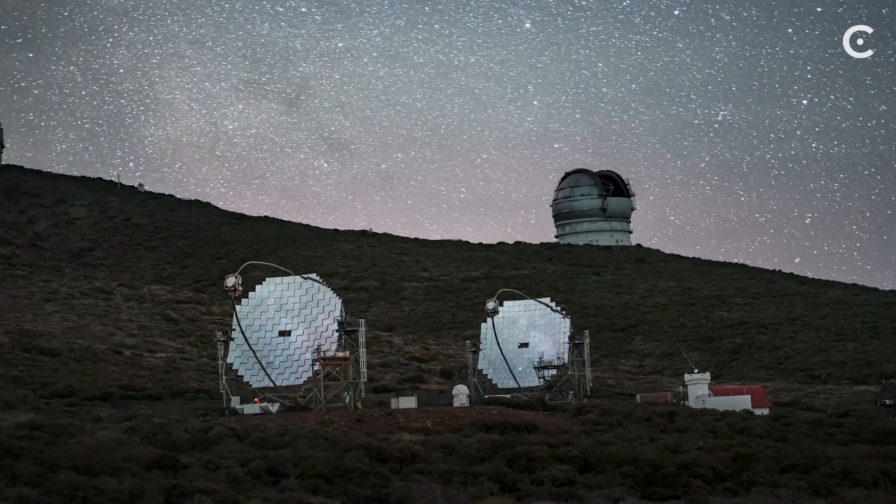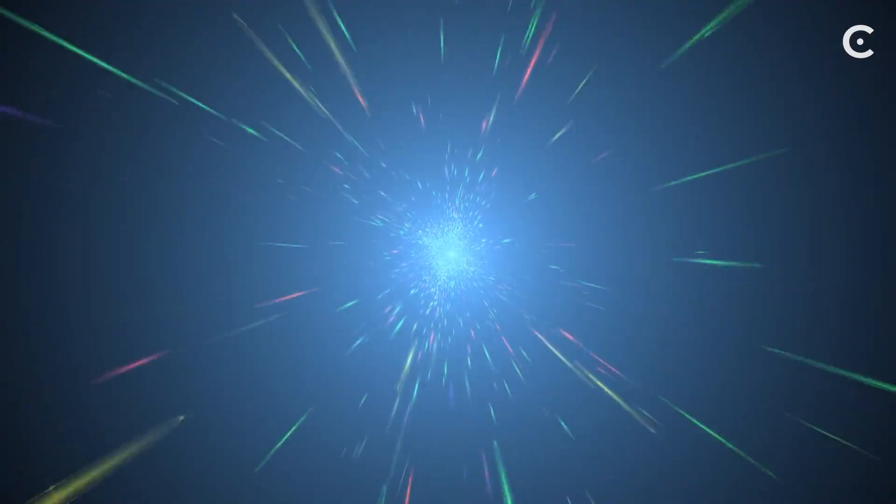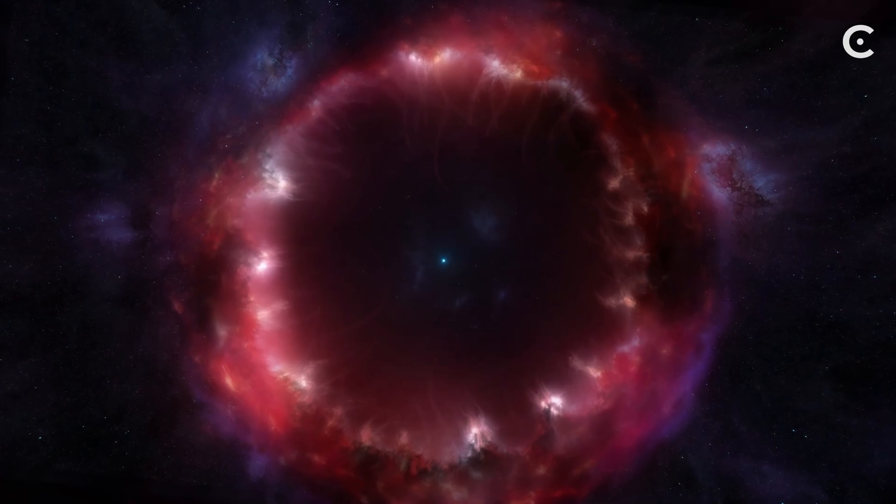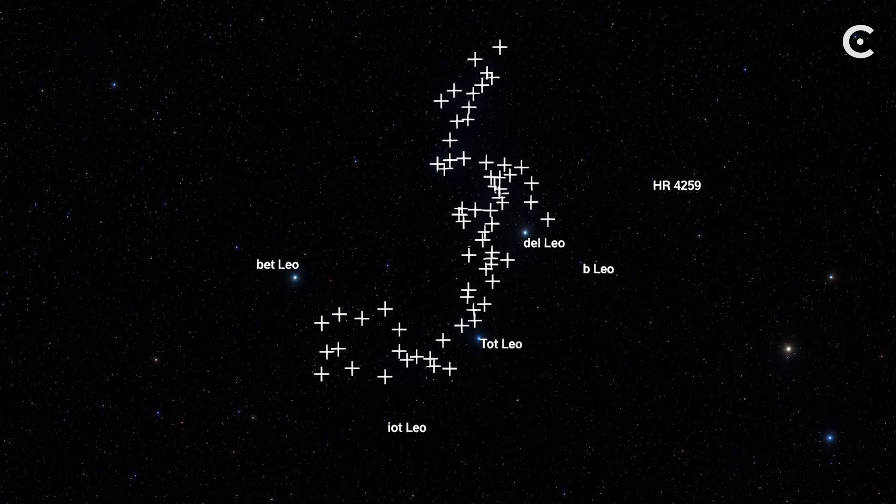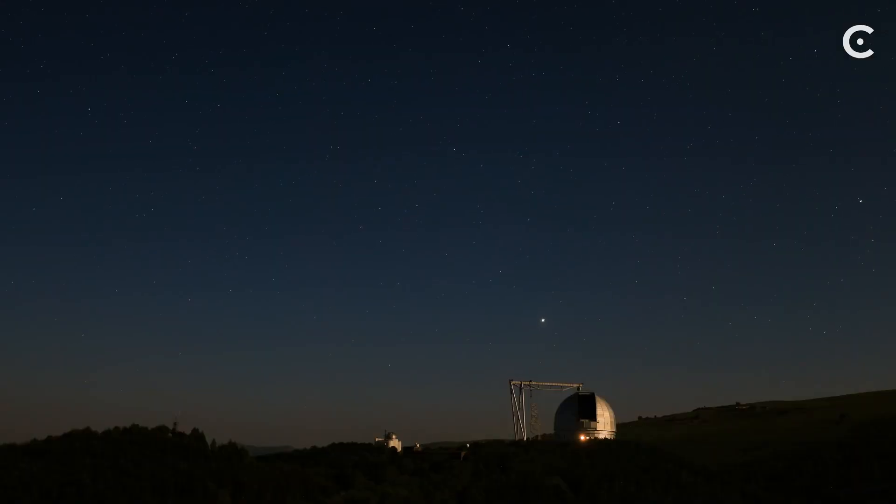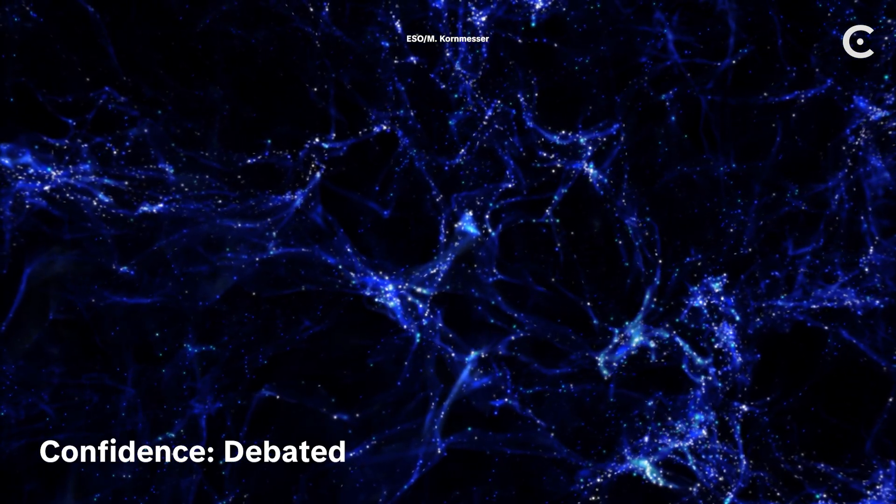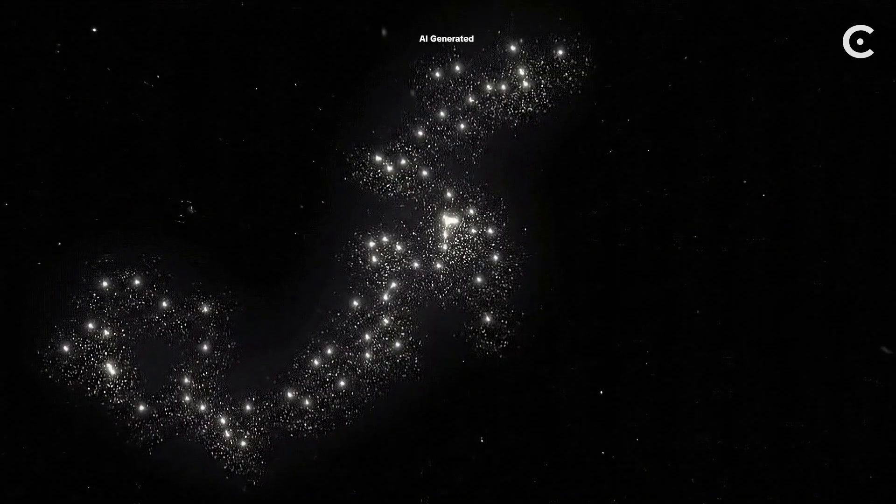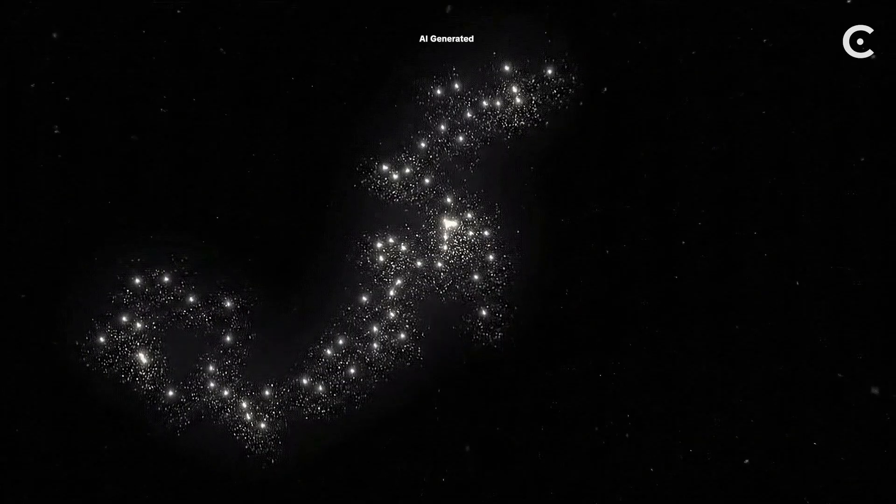Let me put that in perspective. Light from one end of the huge LQG left when the Earth didn't even exist yet. By the time it reaches the other side, our Sun will probably be dead. Now, here's the controversy. Not everyone agrees this is a real connected structure. Some astronomers argue it's more like a statistical fluke. A pattern we're seeing because we're looking for patterns. Quasars are incredibly far apart. And connecting them into one group depends heavily on how you define the boundaries. But if it is real, it's more than three times larger than what the cosmological principle says should exist. That's a problem. Or maybe it's a clue that our understanding of the universe needs an upgrade.